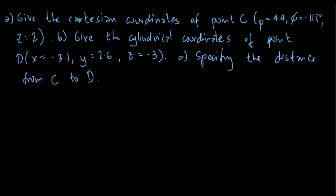Okay, so in this manual we will be solving another example on the circular cylindrical coordinate system. We have here the problem: given the Cartesian coordinates of point C, where rho is equal to 4.4, phi is negative 115 degrees, and Z is equal to 2. That is the first part. The second part is to give the cylindrical coordinates of point D.